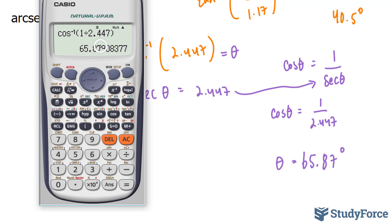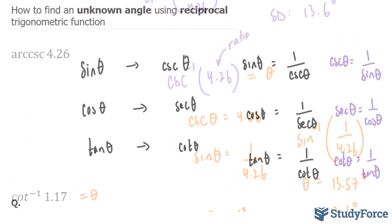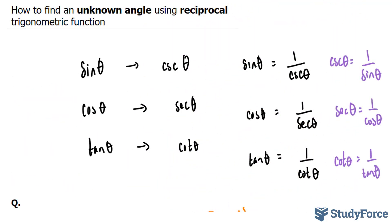You'll notice that the number that you have to discard is a 9, so that goes up by 1. 65.88 degrees. And that's your final answer. That is how to find an unknown angle using reciprocal trigonometric functions.